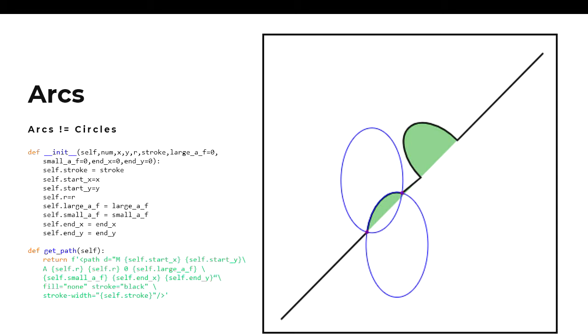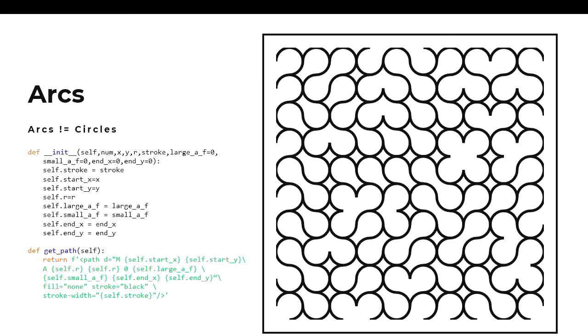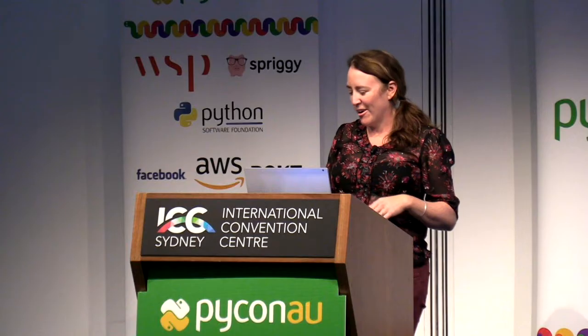Arcs are really unpredictable. An arc is an intersection between a curve and a line. It has a radius width and a radius height, so you can make an oval as well as a circle. You have four different arcs that can be created from that curve-line combination, and there are two flags — ones or zeros — based on which one you want. I quite liked that I had the large arc flag and the small arc flag, which I called large AF and small AF. That made me giggle. When you take lots of arcs and repeat them, you get a cool pattern.